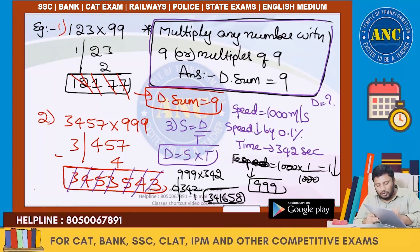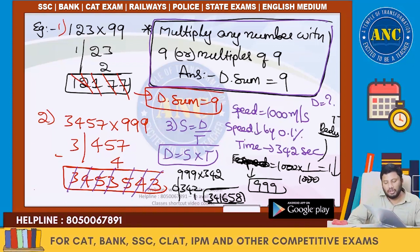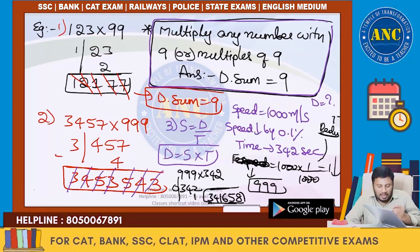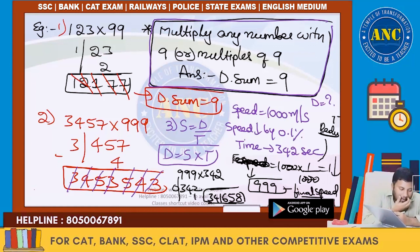Why does the final speed become 999? 0.1 percent decrease means a reduction of 1 by 1000. So 1000 multiplied by (1 minus 1/1000) gives 999. Final speed becomes 999. I hope the idea is clear.